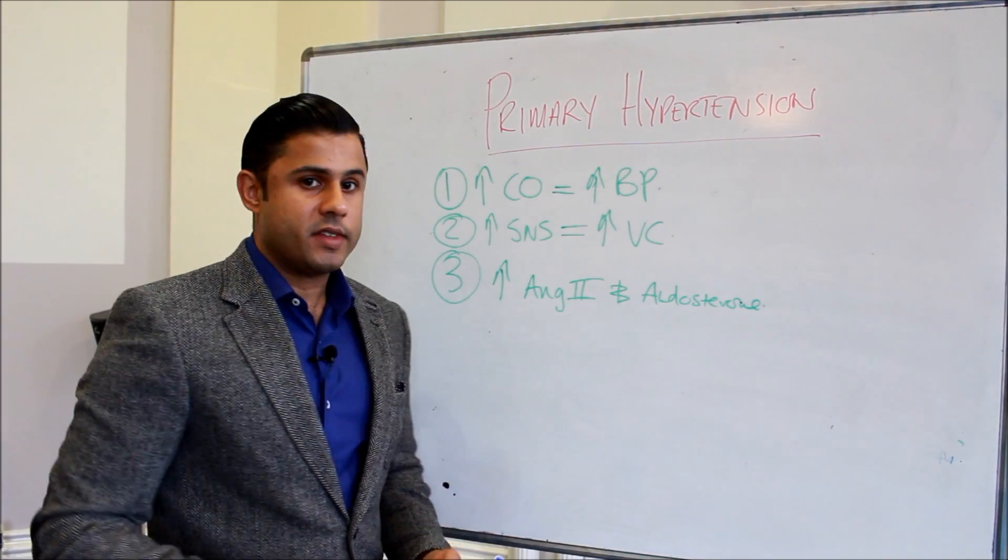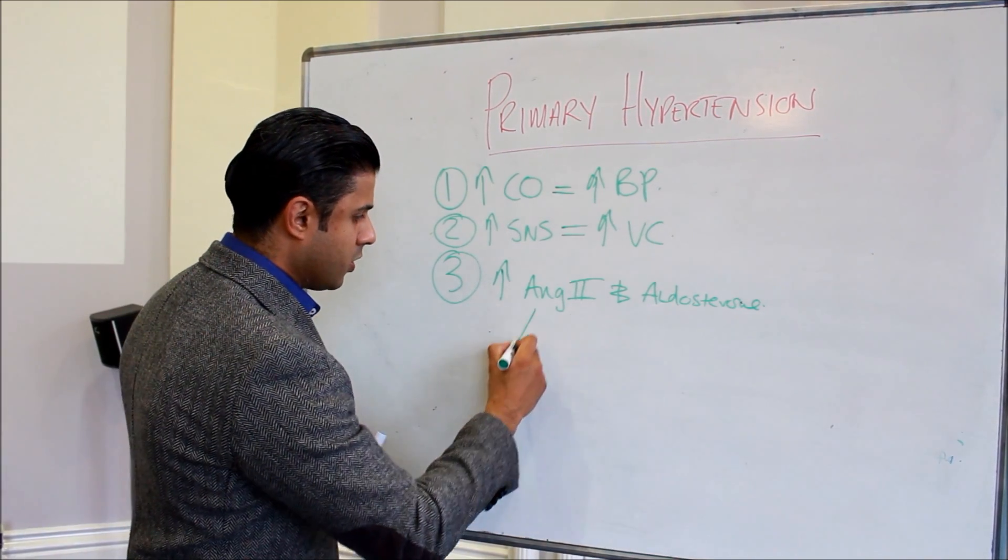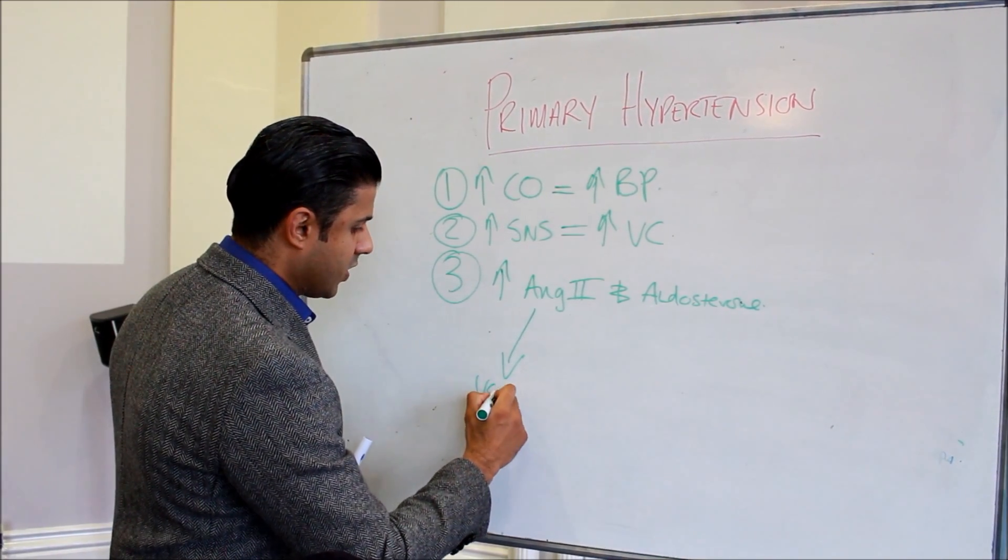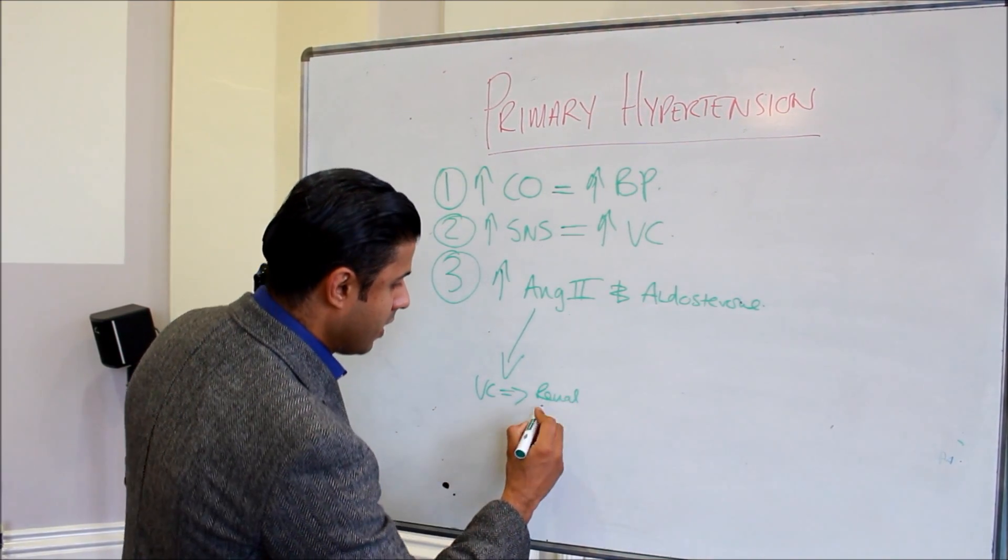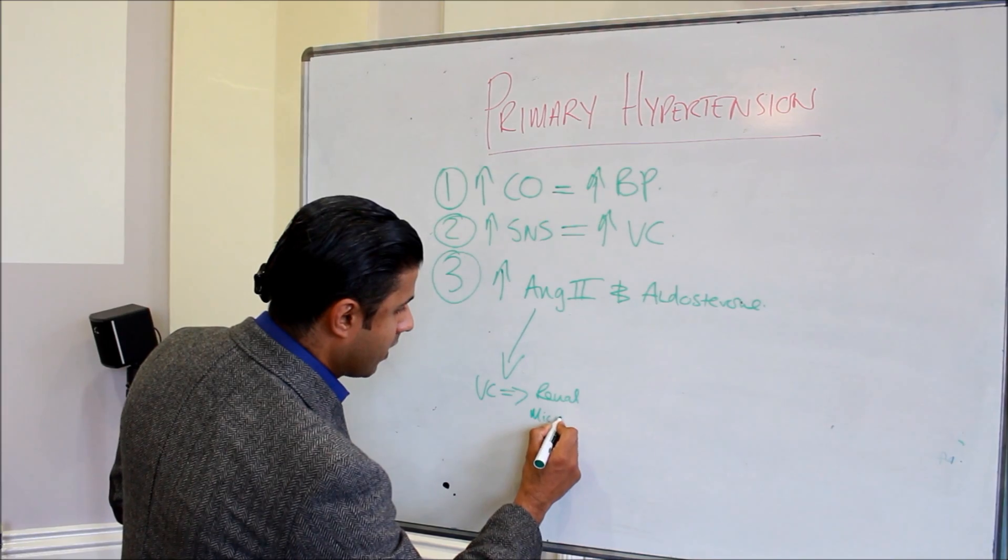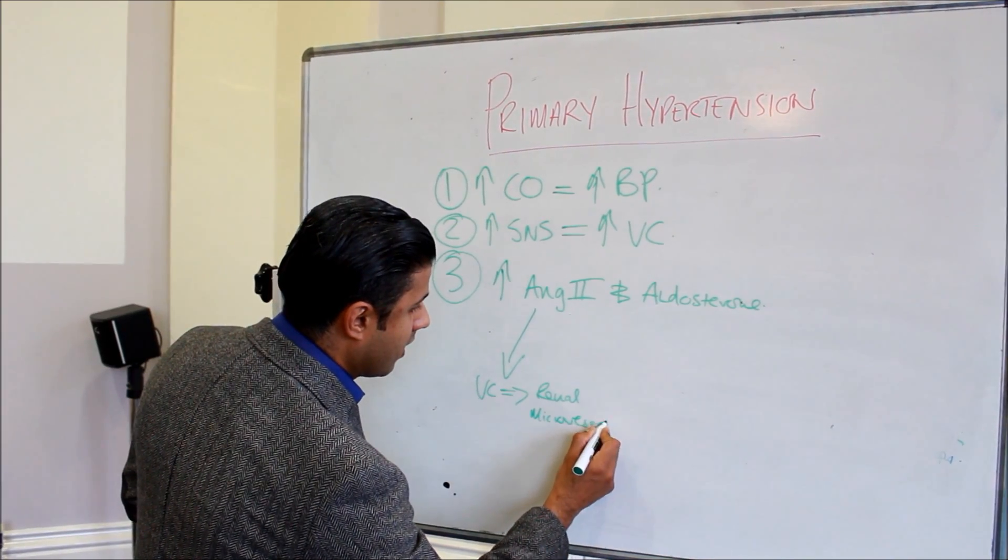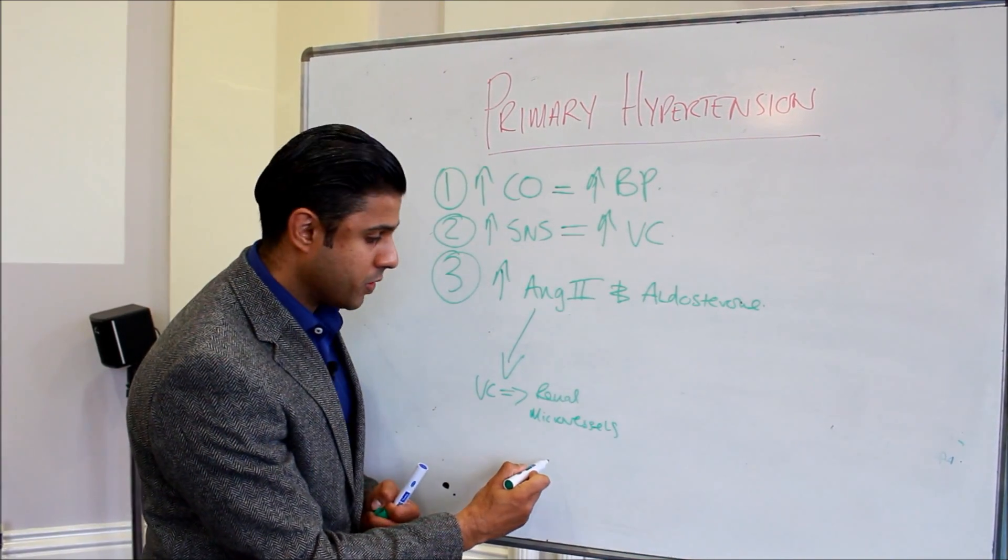We know that angiotensin 2 is a potent vasoconstrictor, so it causes vasoconstriction particularly of the renal microvessels and that impairs kidney function.